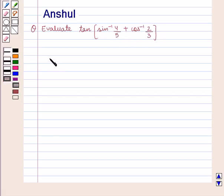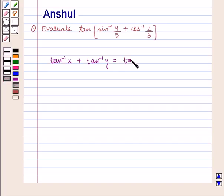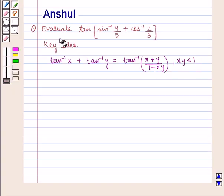We know that tan inverse of x plus tan inverse of y is equal to tan inverse of x plus y upon 1 minus xy, provided xy is less than 1. With this key idea, let us proceed with the solution.